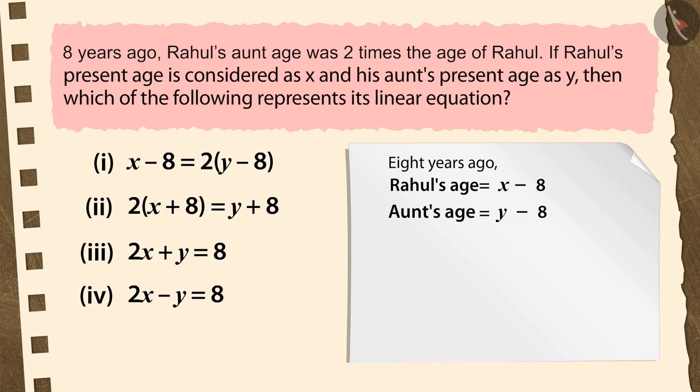8 years ago, both of them will be 8 less than the present, i.e. X minus 8 and Y minus 8. Aunt's age is 2 times Rahul's age. Therefore, we will multiply Rahul's age by 2 to make both sides equal. Solving this further, we get 2X minus Y equals 8.